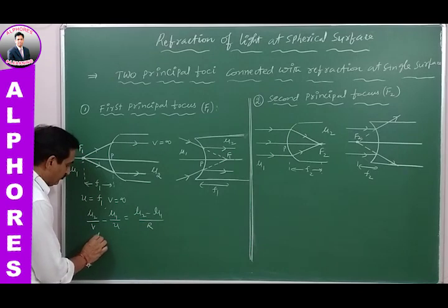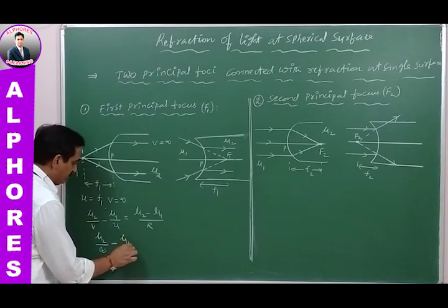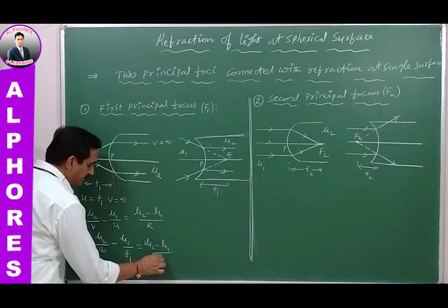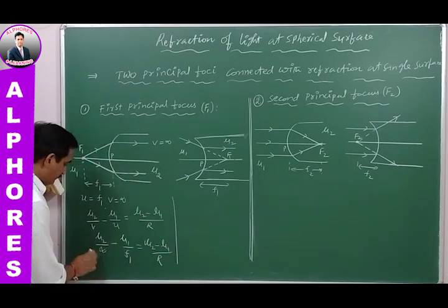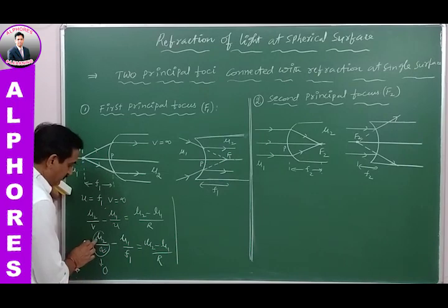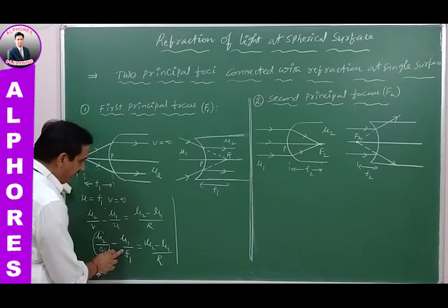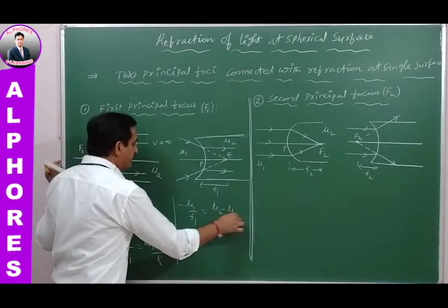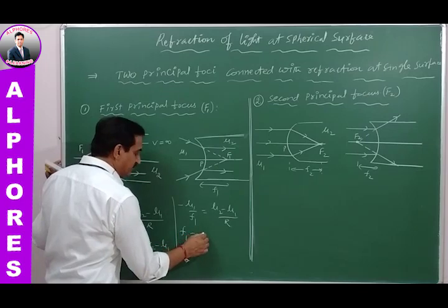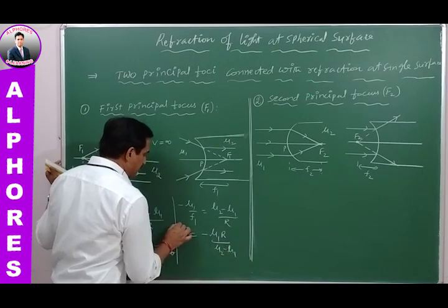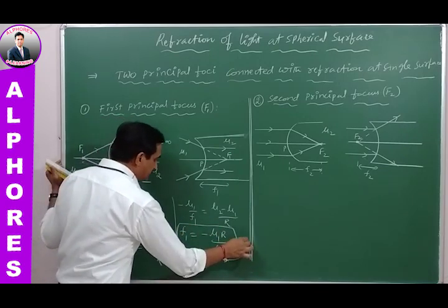Simplifying: μ₂/∞ = 0, so we get −μ₁/F₁ = (μ₂ − μ₁)/R. Therefore, F₁ = −μ₁R / (μ₂ − μ₁). This is the first principal focus point.